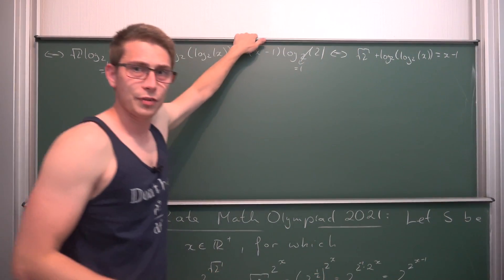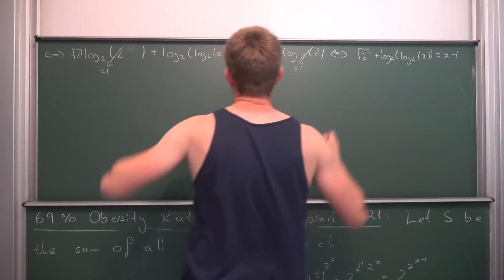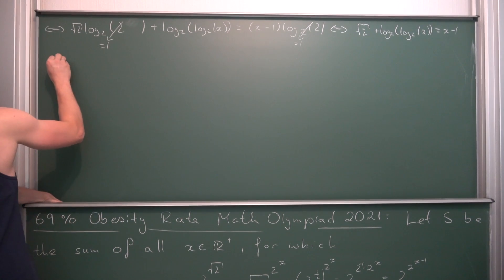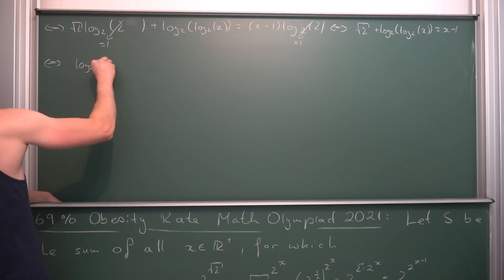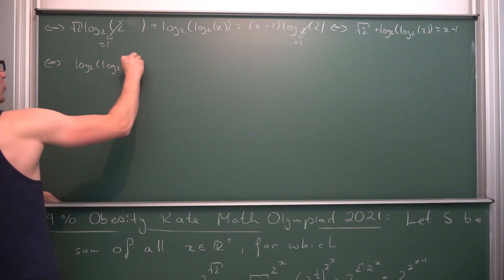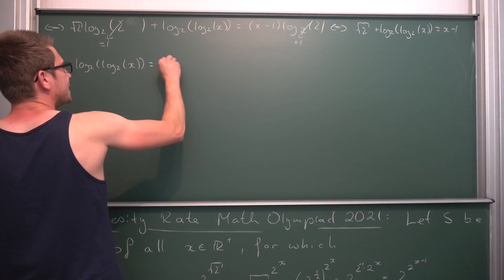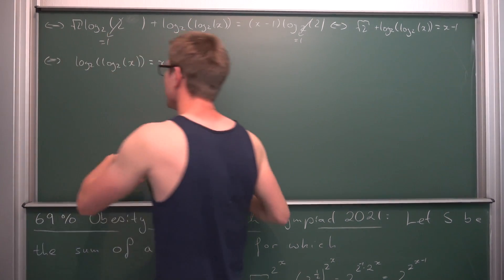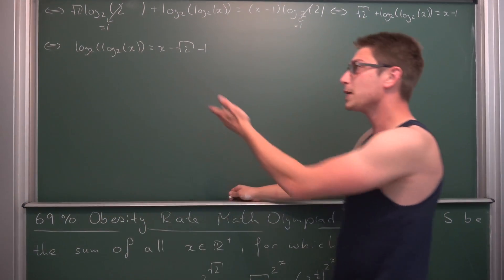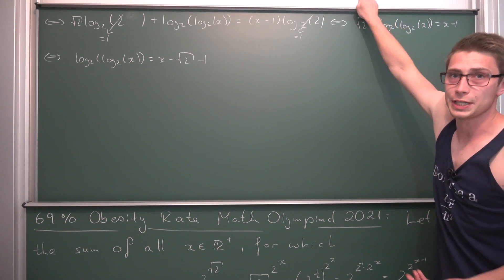Subtracting square root of 2 on both sides gives us: log base 2 of log base 2 of x equals x minus square root of 2 minus 1. What we have here is actually something that we can interpret in a graph.